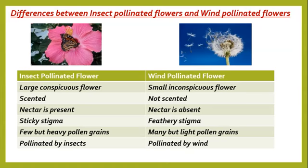As the name suggests, wind-pollinated flowers are pollinated by the wind, and insect-pollinated flowers are pollinated by insects. These are some of the differences between the two. Today, dear learners, we touched on the second stage of the life cycle of flowering plants — pollination — its meaning, and the types: self-pollination and cross-pollination. We also touched on the differences between insect-pollinated flowers and wind-pollinated flowers.